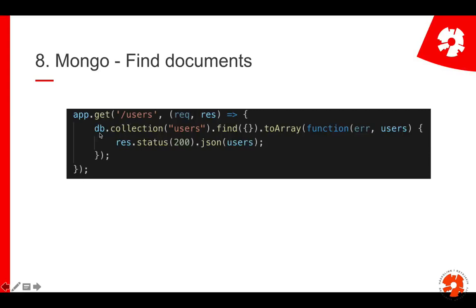When I want to get all users, I get the collection of all users and use a find command, comparable to SELECT in SQL. Instead of the star in SQL, I just pass empty JSON curly braces — meaning find without any condition, so find everything. Whatever is returned, I convert to an array using a callback function, and once I get the array back, I return it.